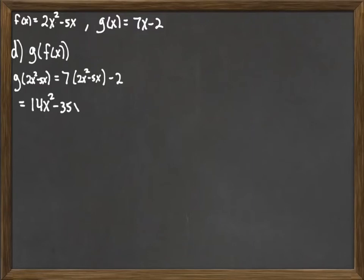And then we just want to simplify at this point. So 7 times 2x squared is 14x squared. 7 times minus 5x is minus 35x minus 2. And in this case, there's nothing else I can do there. None of those things are like terms, so we leave it as 14x squared minus 35x minus 2.